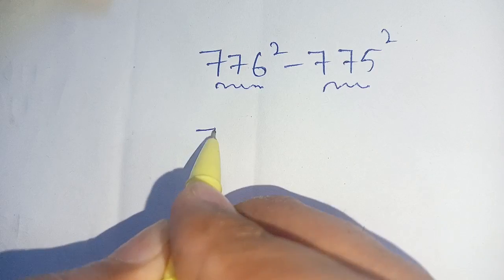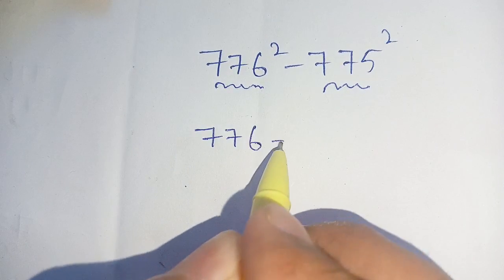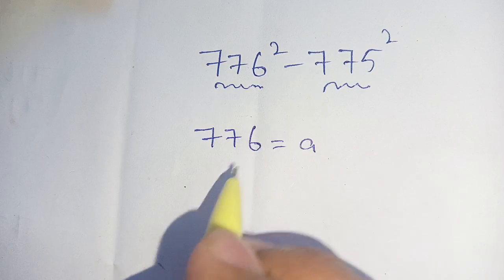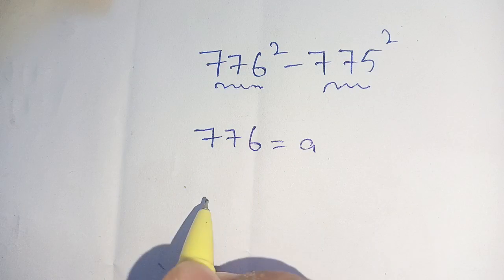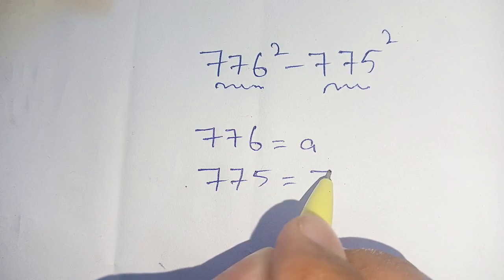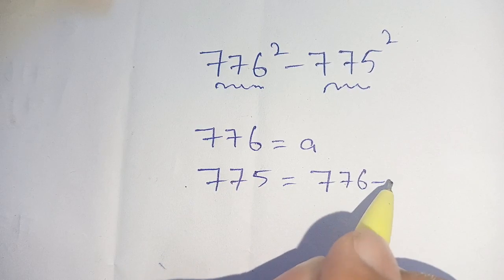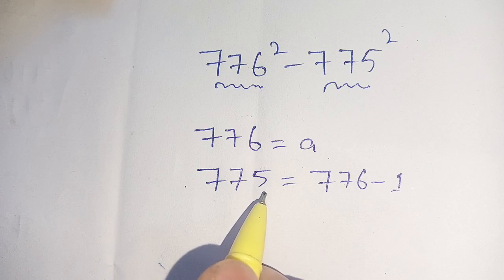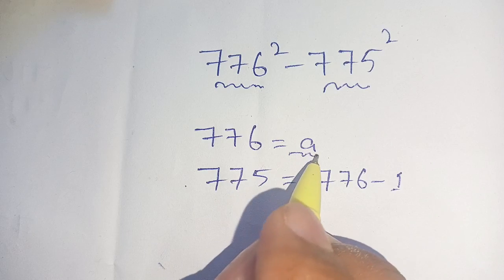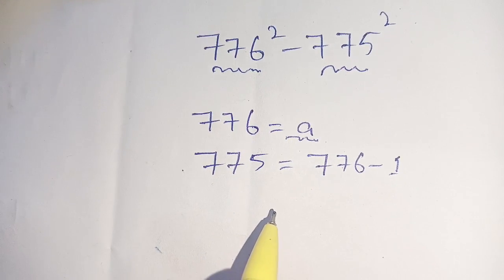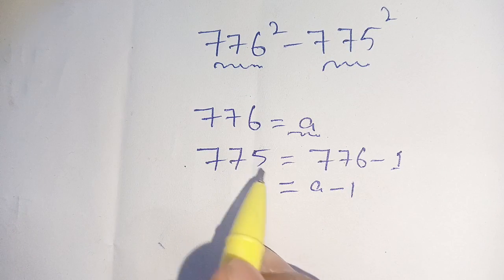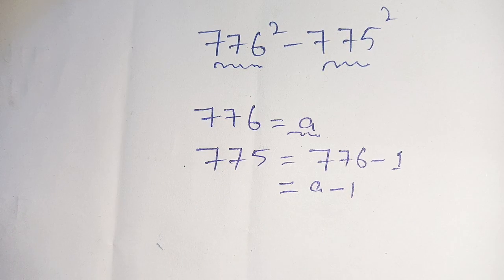Let us consider that 776 is equal to A. Then 775 can be written in terms of 776 as: 775 is equal to 776 minus 1. But 776 is equal to A, as we considered. So it is equal to A minus 1. Thus, 775 is equal to A minus 1.